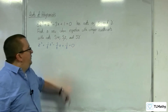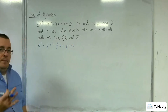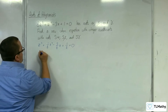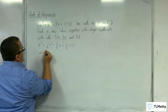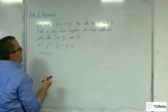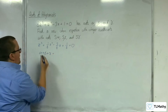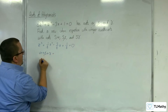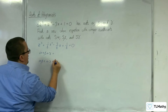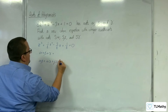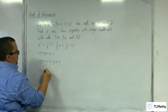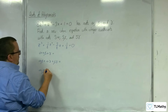From this, we want to be able to write down the sum of the three roots, so alpha plus beta plus gamma. We want to write down the sum of the product pairs, so alpha beta plus alpha gamma plus beta gamma. And we want to write down the product of the three roots, so alpha beta gamma.